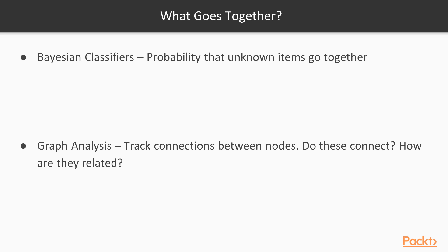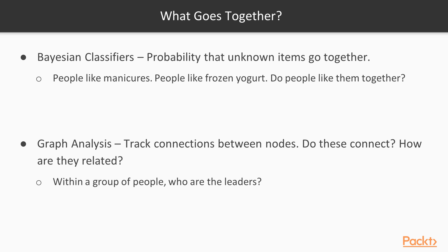When you have questions like 'what goes together,' those are questions about Bayesian classification — what's the probability that these unknown items go together — which we'll cover in section four. For example, people like manicures, people like frozen yogurt, but do people actually like them together? That answer is no. I actually lived near a restaurant that did this, and they went out of business because those do not actually overlap. If you were to run some classifiers on it, you could tell that those do not go together.